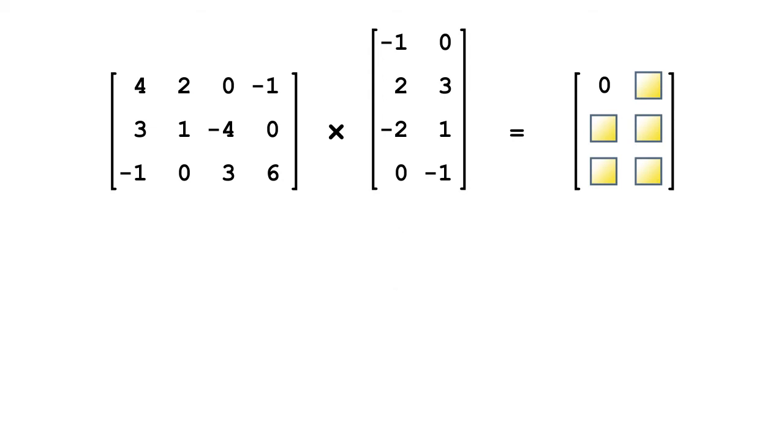We repeat the process with the second row and first column to get the element that goes in the second row, first column of the final matrix. Can you see a pattern forming? We keep doing this multiply then add process for all rows of the left matrix and all columns of the right matrix.